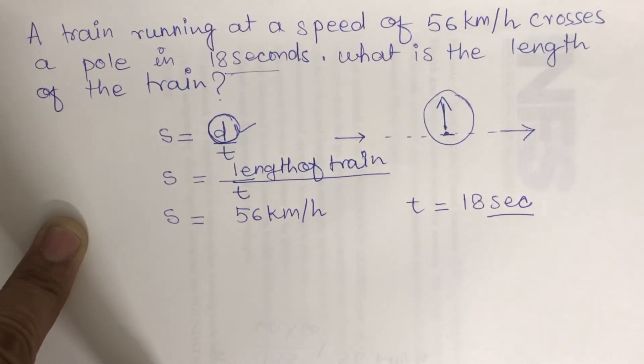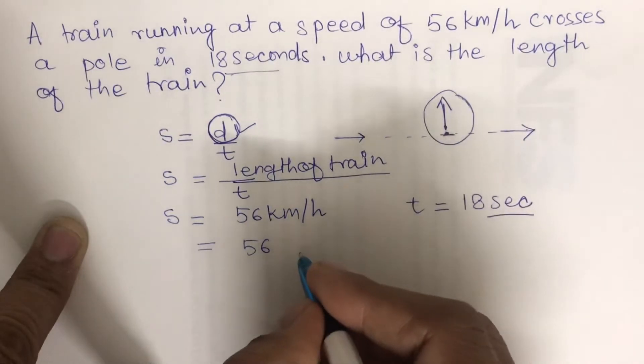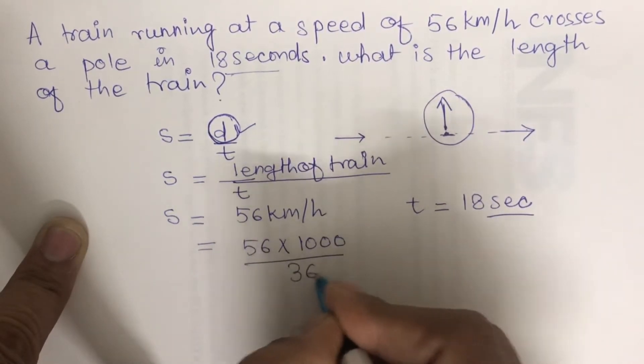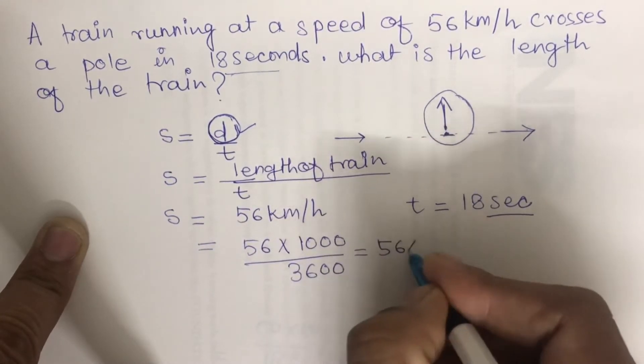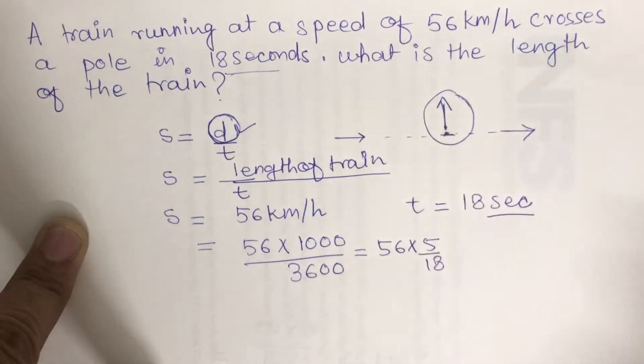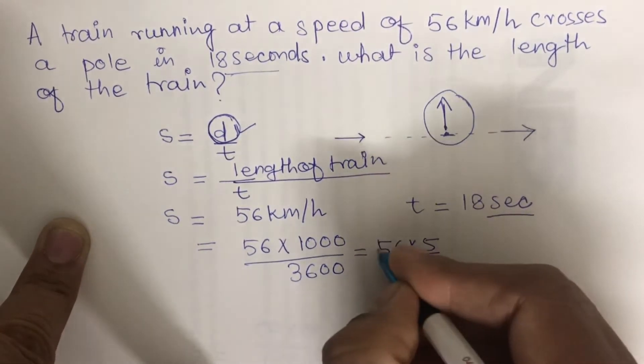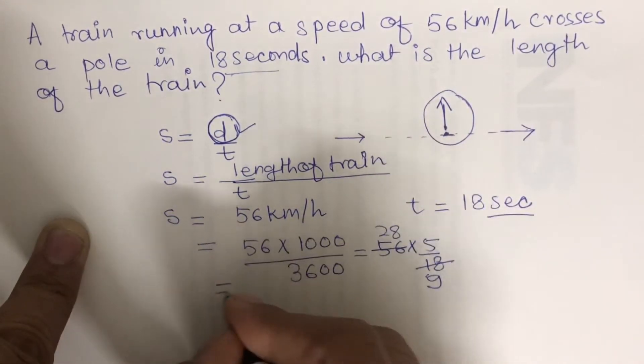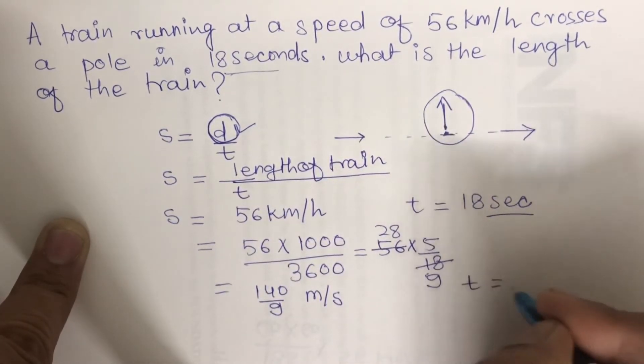First, we will convert everything into meters per second. To convert 56 kilometers per hour into meters per second, we multiply by 1000 and divide by 3600. So it will be 56 multiplied by 5/18, which equals 140/9 meters per second, and time equals 18 seconds.